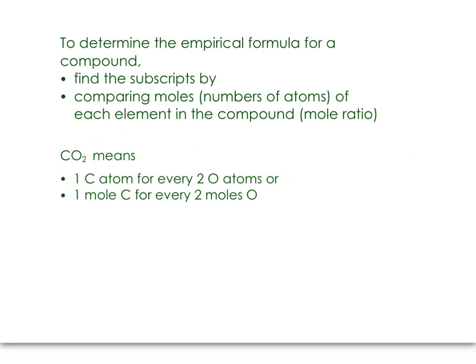So what does this mean? Well, in CO2, for example, you can look at the subscripts: one carbon atom for every two oxygen atoms. Or, if you think along the lines of a mole ratio, one mole of carbon for every two moles of oxygen. This is what we're going to be looking for — the mole ratio between the elements that make up the compound.